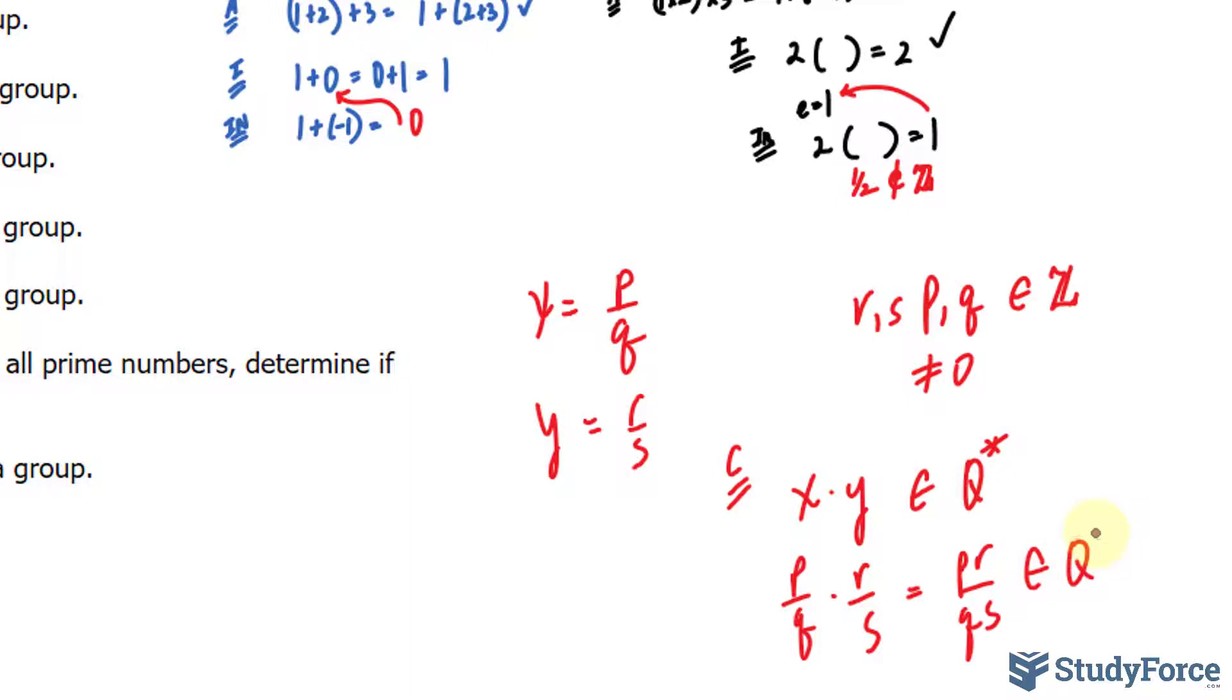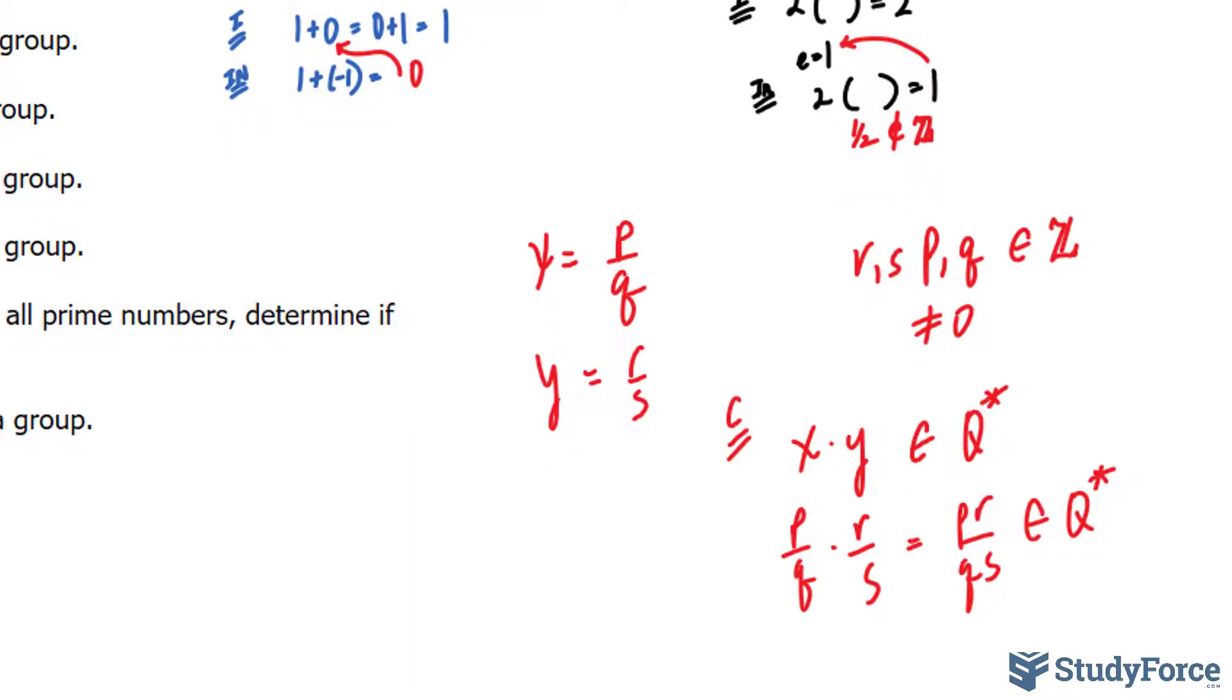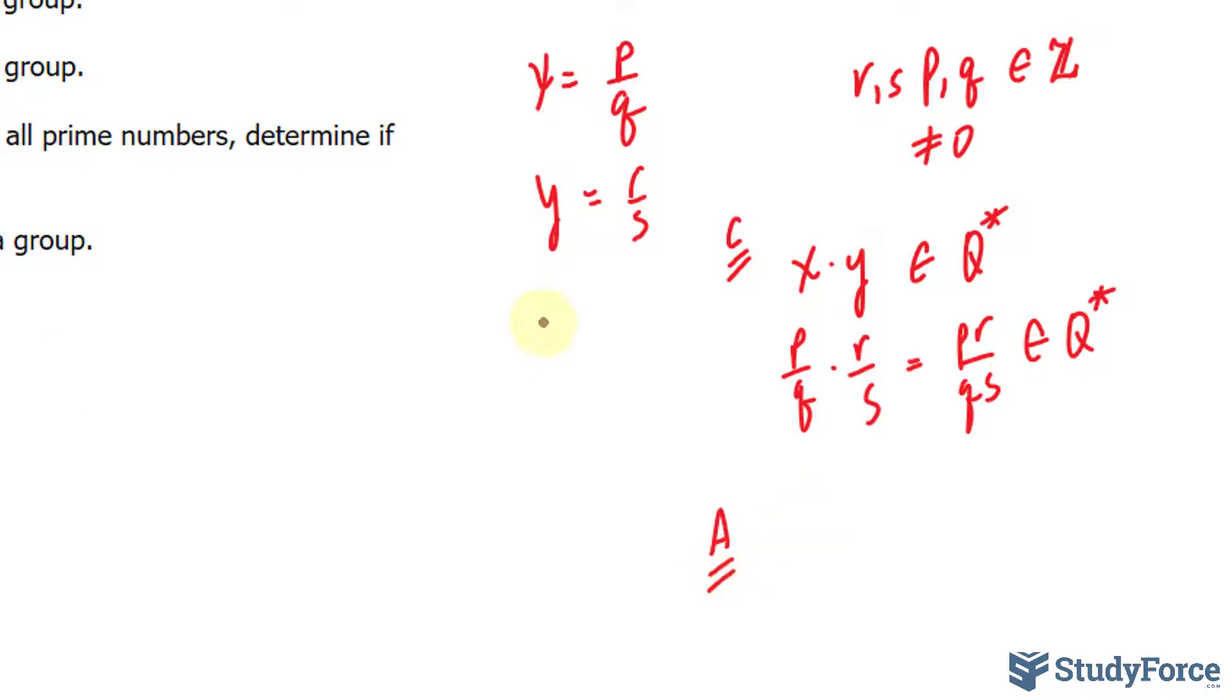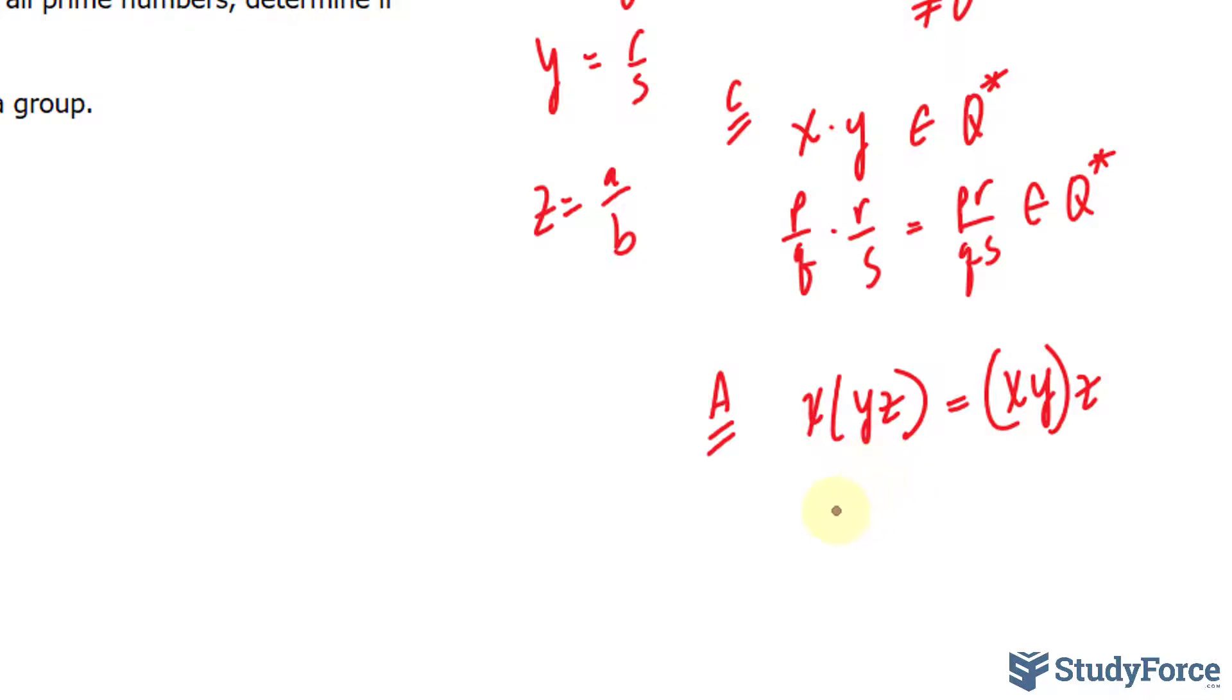Let's try associativity now. This time we'll assign z to be a/b. And I'll put that also in this category because we need 3 elements for associativity. (x × y) × z should be the same as x × (y × z). And it turns out to be true. pra/qsb in that order is the same thing as pra/qsb. So associativity passes.